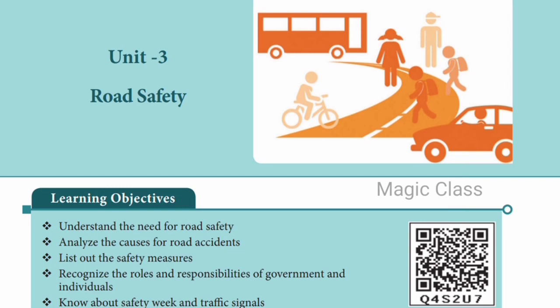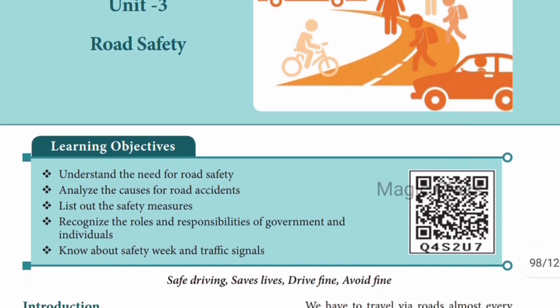Hello students, welcome back to Magic Class Channel. We will talk about Standards 7, Term 3, Civics, 3rd lesson - Road Safety. This is a very general lesson, just the basic concepts. You already know the road safety rules, so if you understand that's more than enough. The learning objectives are: understand the need for road safety, causes of road accidents, safety measures, roles and responsibilities of every individual and the government, and to know about road safety week and traffic signals.